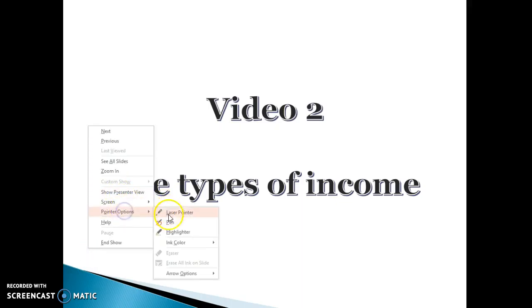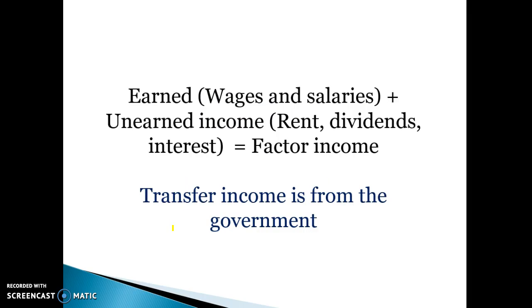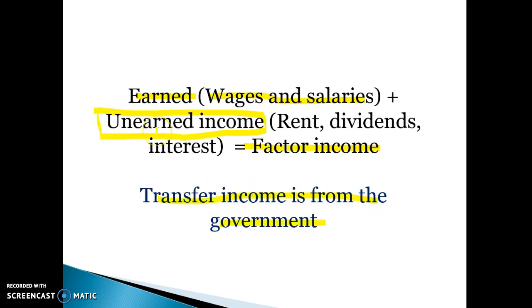In this video we're going to look at the different types of income and how equitable and inequitable these different types are. In the first video we looked at factor income, which includes all earned income — wages and salaries — plus all unearned income — rent, dividends, and interest. Unearned income is not transfer income; government transfer income is money from the government for pensions or welfare, which is different. Together, earned and unearned income equal total factor income.